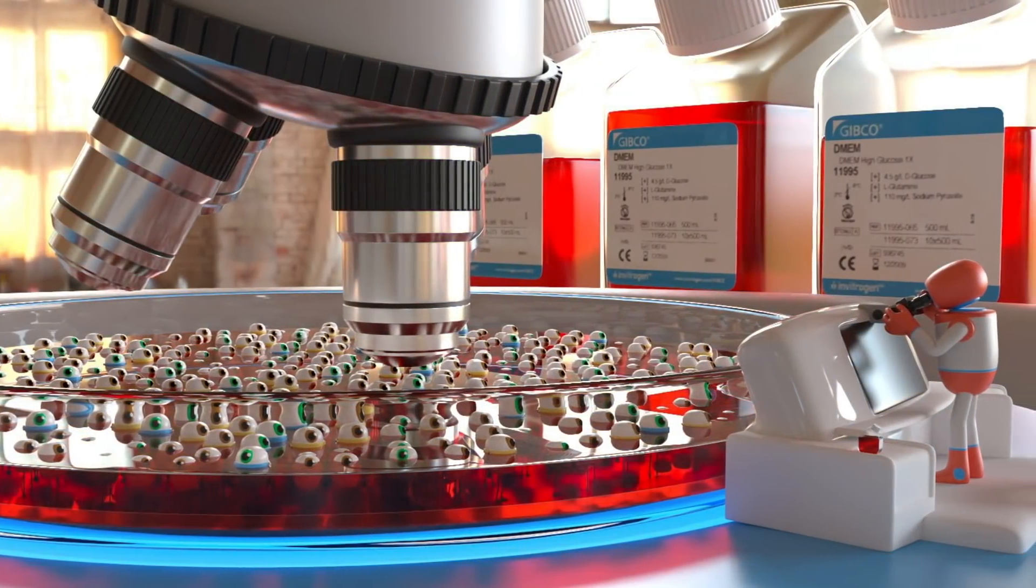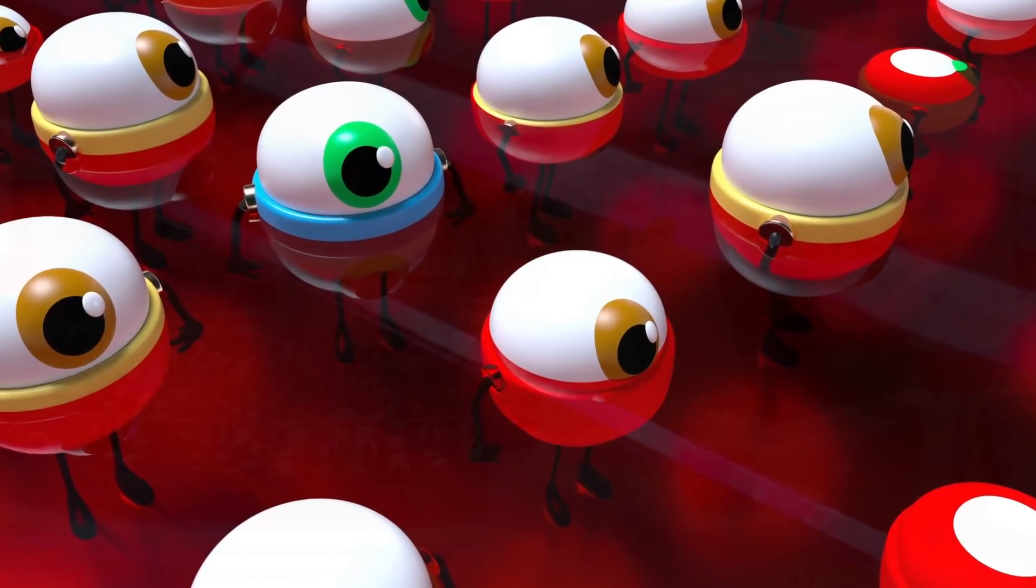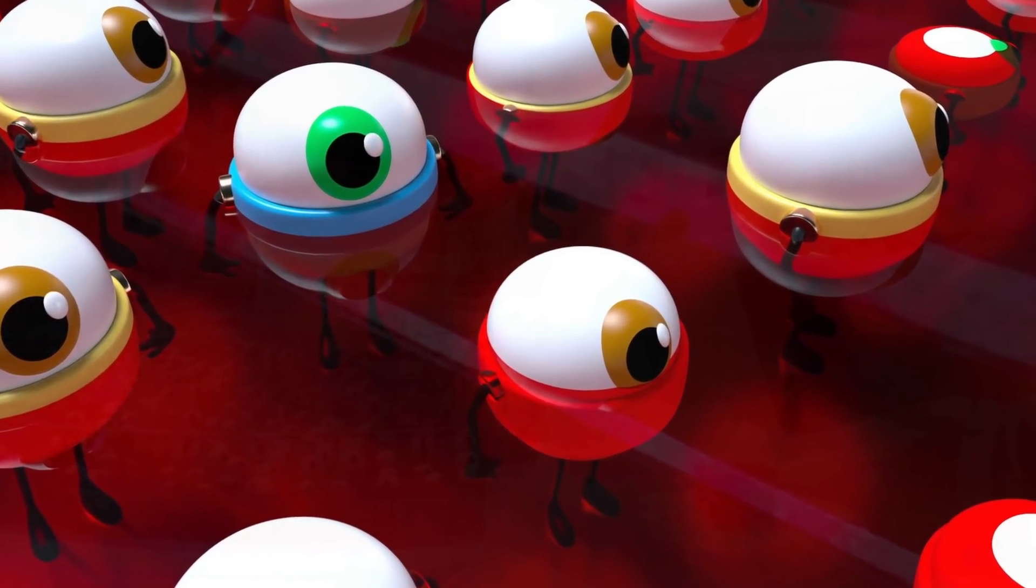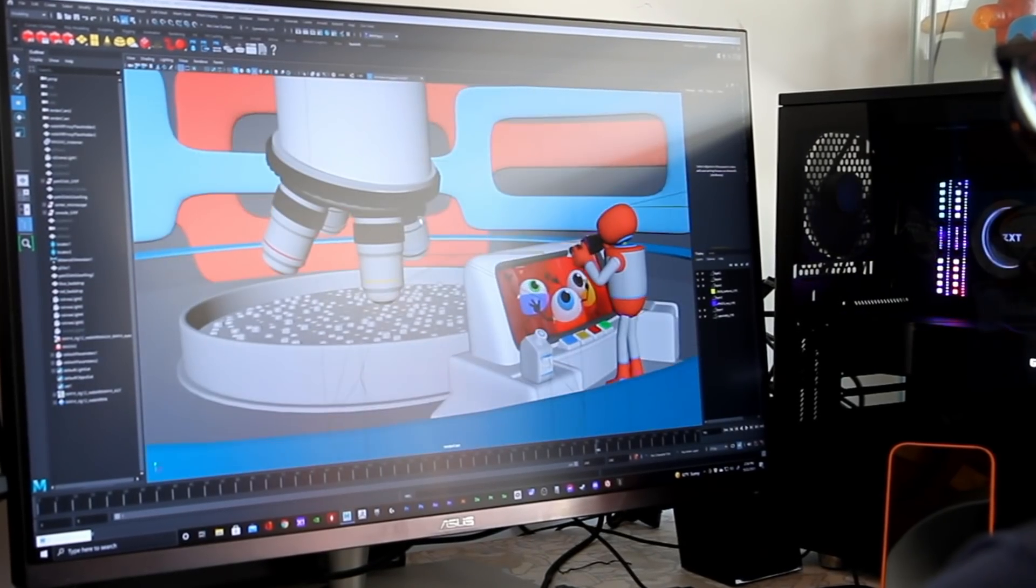The cells, floating in their media in the Petri dish, all appear to be very similar from a distance, but upon closer inspection, you can see that they are different shapes and colors.